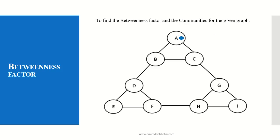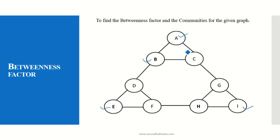If we see node A, node E, and node I — these are the corners of the graph. So the betweenness factors for these three nodes will be 0. Now to calculate the betweenness factor for node B, we need to find the shortest paths where node B lies in between. If I have to travel from A to C, I can travel directly — B does not come into the picture.